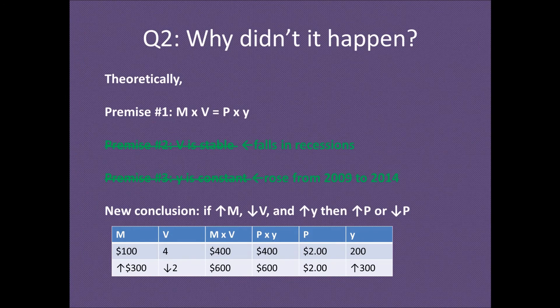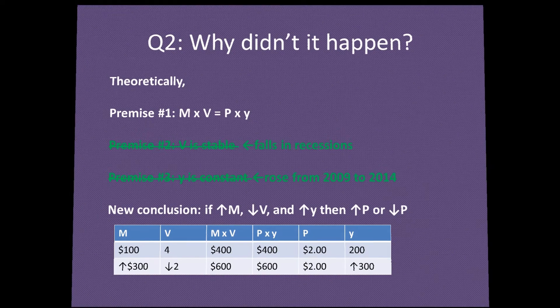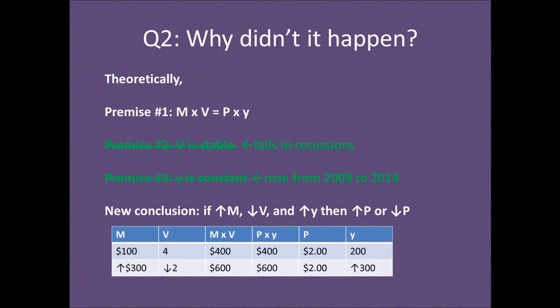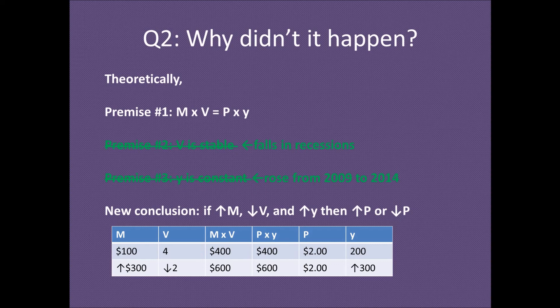So why did they expect inflation? Because the money supply went up a lot. Why didn't it happen? The post-Keynesians would say premises two and three are wrong. Premise two: velocity is stable — actually, velocity tends to fall in recessions. People spend money less quickly; they're scared and hold on to it, just like with the fundamental uncertainty. Federal Reserve studies have shown that the velocity of money collapsed after the financial crisis as people held on to cash.